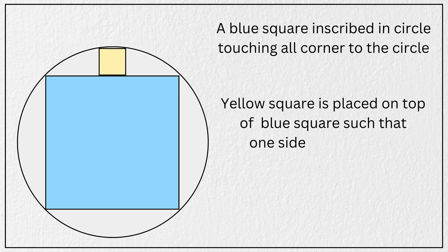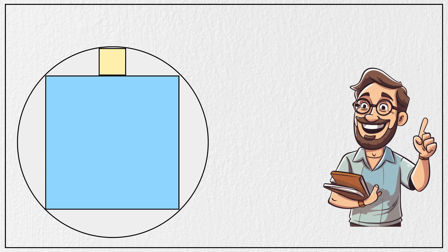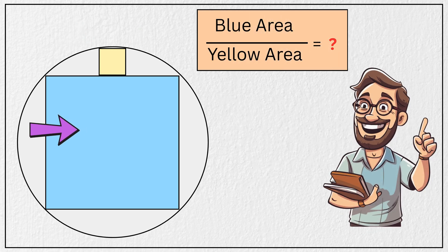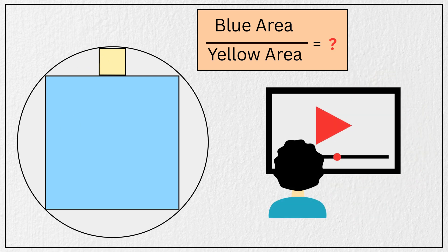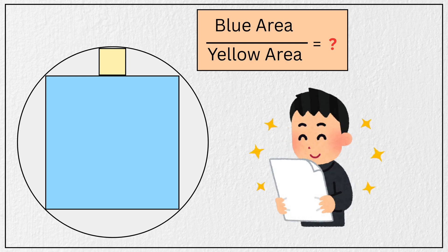And another yellow square is placed on top of the blue square such that one side of the yellow square lies on the blue square and its other two corners touch the circle like this. And the question is to find the ratio of the area of the large square to the area of the small square. You can pause the video and take a moment to think about it, and when you are ready, you can always come back to verify your answer.